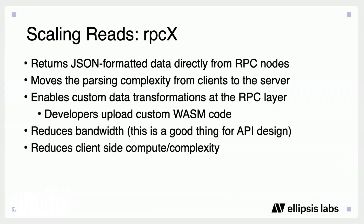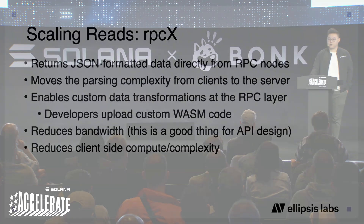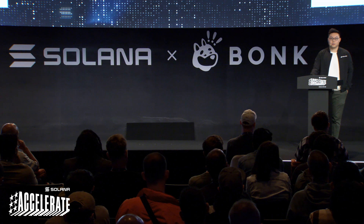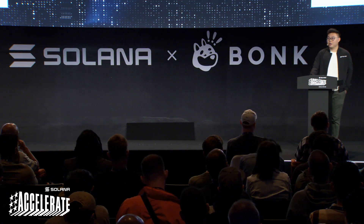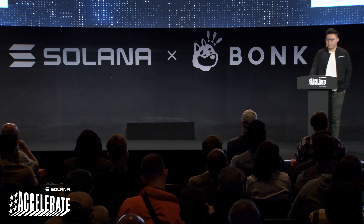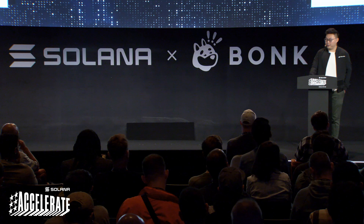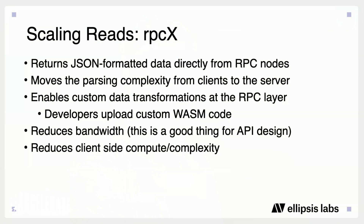The second way we scale reads is via a new innovation we're calling RPC-X. Anyone who's worked with Solana before knows that the data returned by the Solana RPC is extremely difficult to process as a developer — you're given a raw stream of bytes that's very hard to work with. Instead, on Atlas we directly send JSON-formatted data from the RPC nodes, moving complexity away from the client and towards the server. Atlas supports the ability for users to upload custom parsers directly to their servers in WASM. You build a WebAssembly module that can parse accounts or transactions, and this code is executed before the data is sent back to the user.